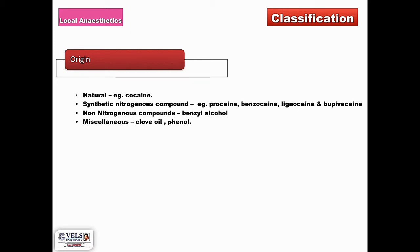Based on origin, the local anesthetics can be classified into different categories like natural resources — for example, cocaine; synthetic nitrogenous compounds — for example, procaine, benzocaine, lignocaine, and bupivacaine; non-nitrogenous compounds — for example, benzyl alcohol; and miscellaneous compounds such as clove oil and phenol.